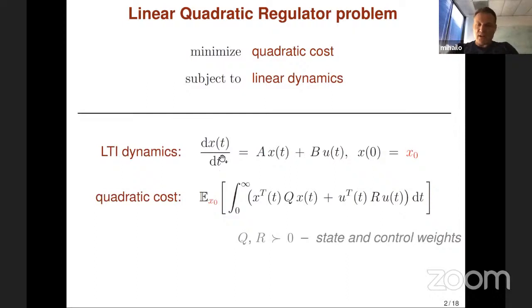We consider a continuous time problem in which evolution of the state vector is governed by this first order differential equation in the presence of control input U with a random initial condition X naught. Matrices A and B are constant matrices that determine model parameters.